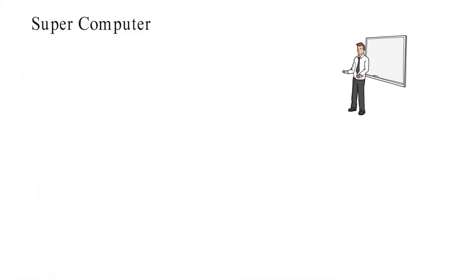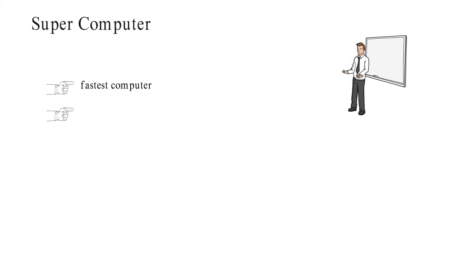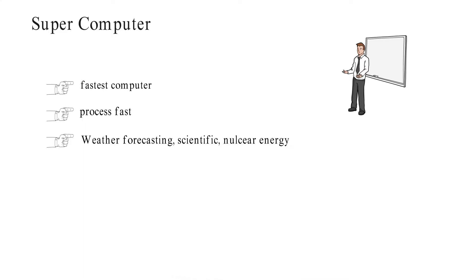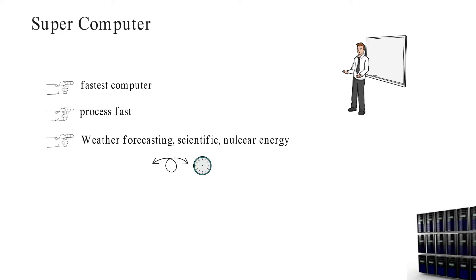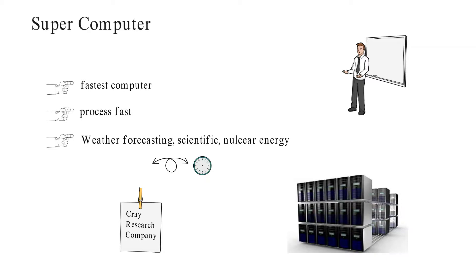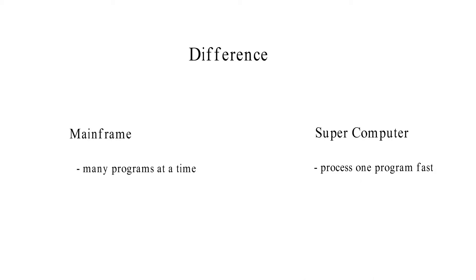Supercomputer. Supercomputer is the fastest computer currently available. The supercomputer processes programs as fast as possible. It is used in weather forecasting, scientific research, nuclear energy, etc., where fast results are important. Cray Research is the best manufacturer of the supercomputer. The only difference between mainframe and supercomputer is: mainframe processes many programs at a time, and supercomputer processes one program as fast as possible.